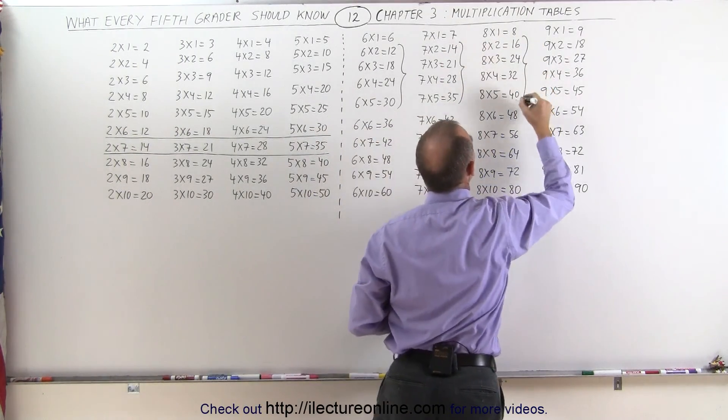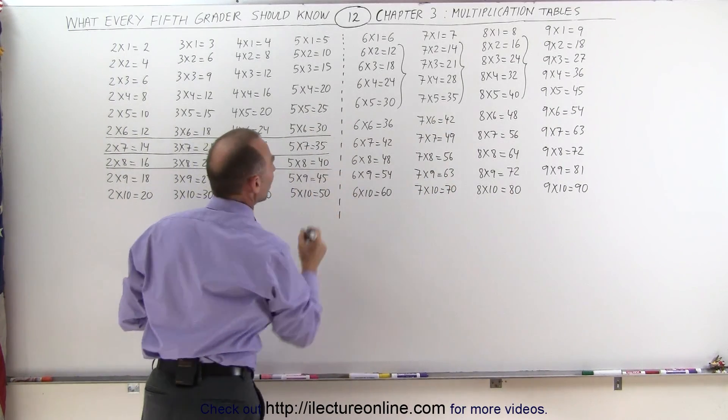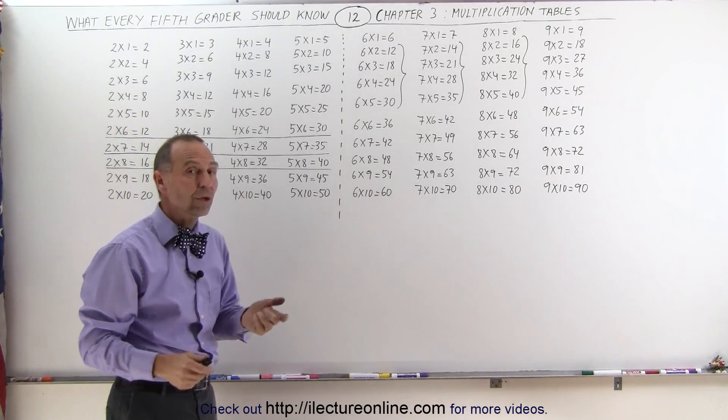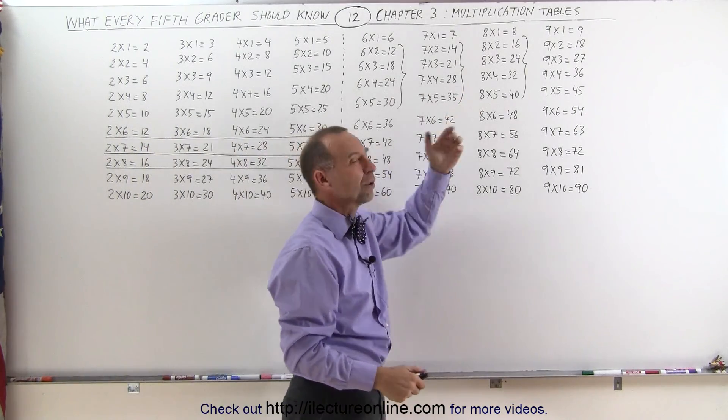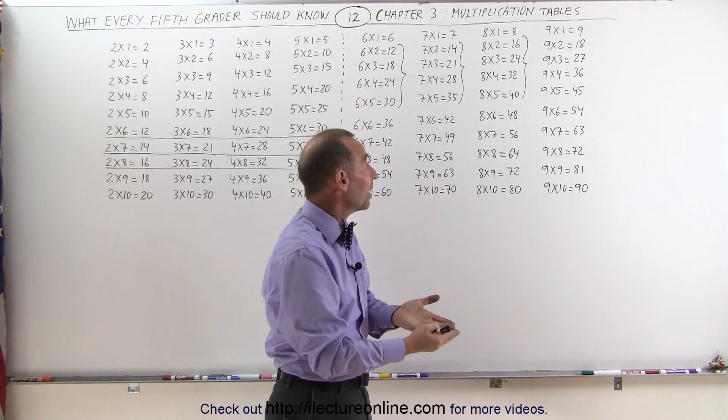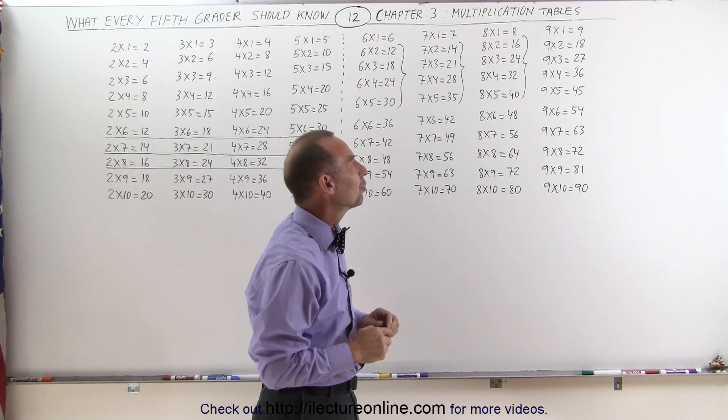And when you look at those answers right here, you get the same answers as when you look at these. But in other words, if you remember what 4 times 8 is, 32, and then you see 8 times 4 and you don't remember, then you say, well, 8 times 4 is the same as 4 times 8, therefore it's 32, and that's how you have less work to do to memorize these numbers.